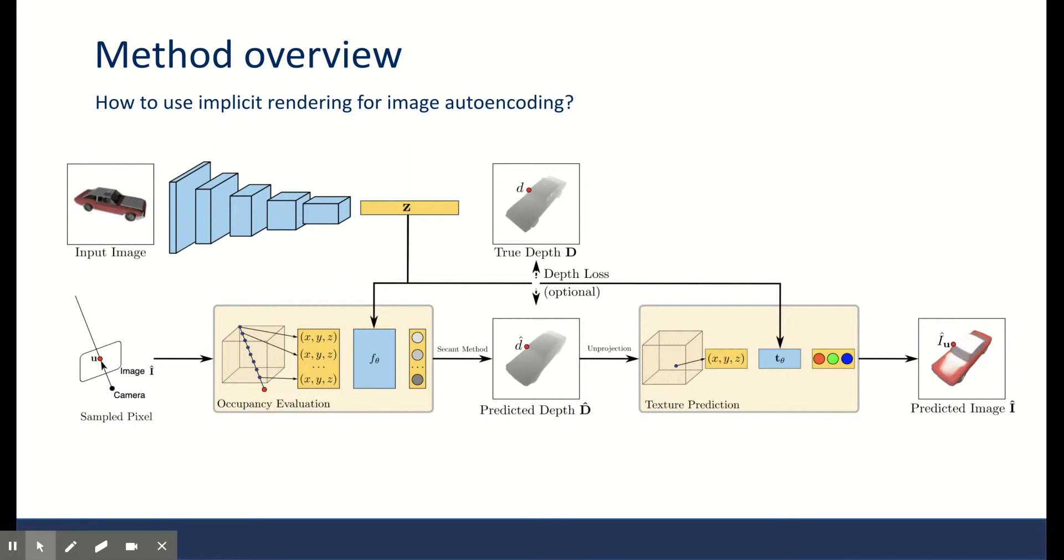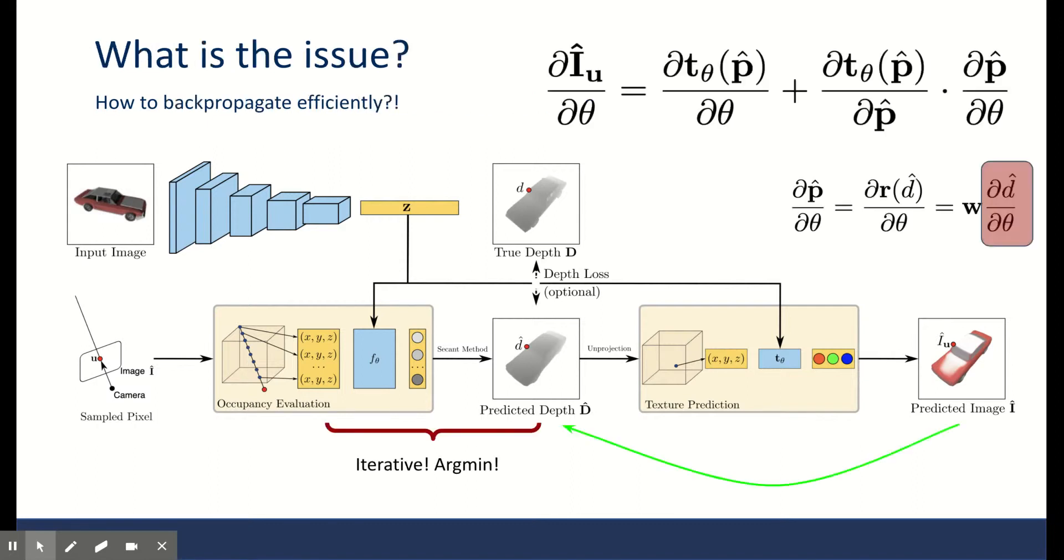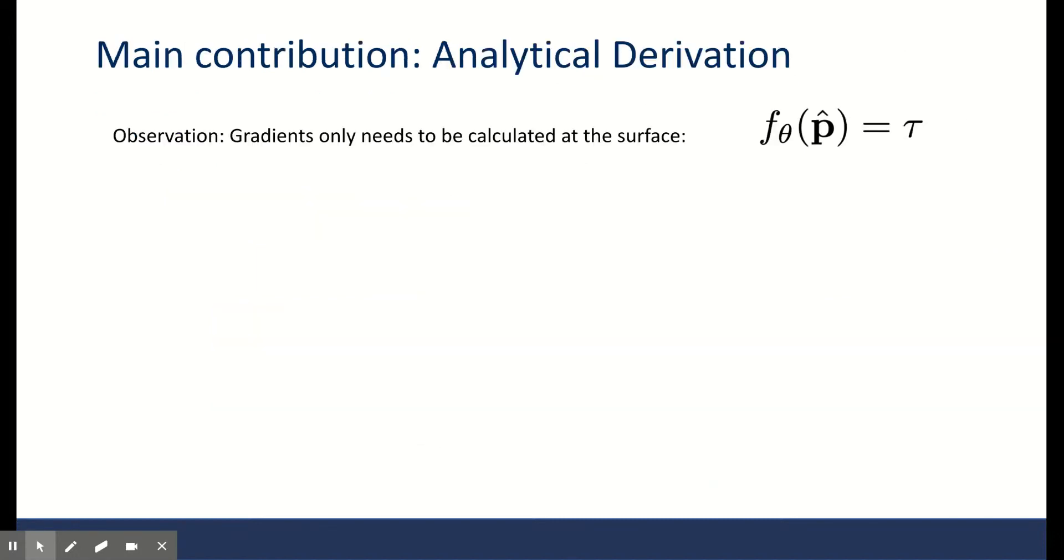So what's the tricky part here? The gradient. We need to backpropagate from the rendering all the way back toward the input image. The gradient from the predicted image to the predicted depth is straightforward. The issue is with the ray tracing. Remember, it had the argmin and iterative procedure. So what we are looking for is the gradient of depth D with respect to the model parameters theta. The main observation is that we only need to calculate the gradient at surface points. Fortunately, for these points, we have the criteria that they are roots of f.